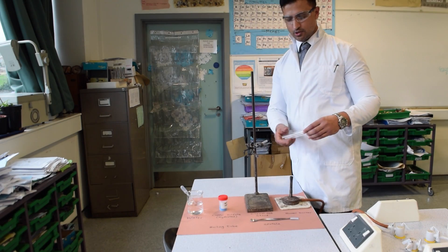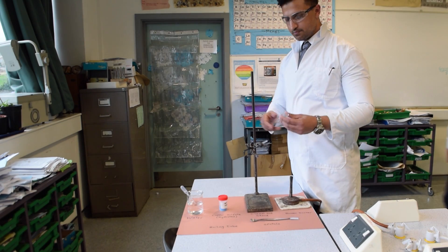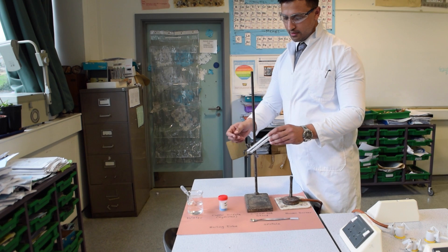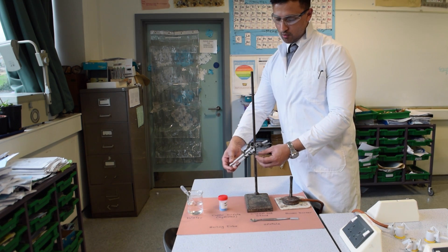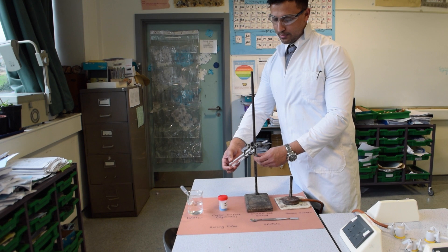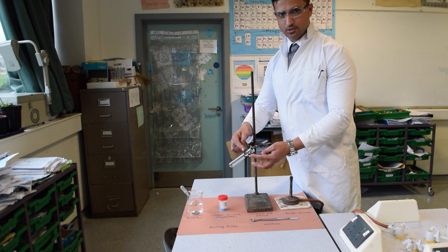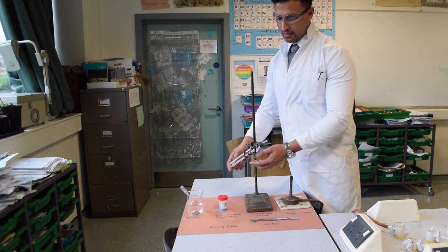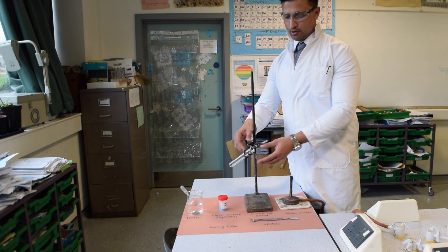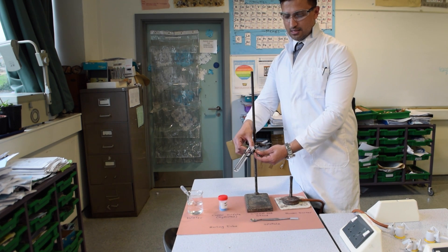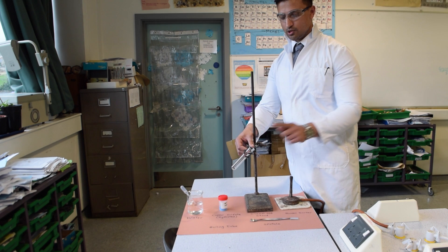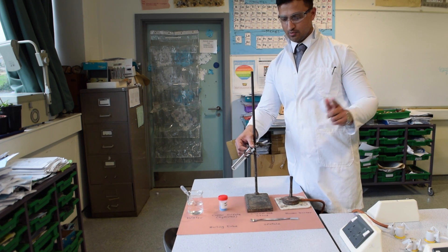The first thing you need to do is get your boiling tube and attach it to the clamp. Make sure you clamp it near the neck of the tube. You don't want it too far down because you're going to be heating this side. Also, you want it at a slight angle, so if anything does come out, you know which direction it's going to move in.